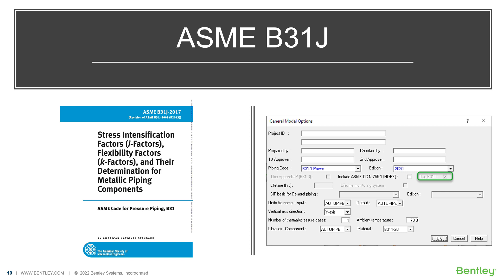B31J provides detailed calculations for flexibility factors, branch and header flexibilities, SIF values, and some commentary on experimental results as well. The incorporation of such flexibility factors aims to provide a more realistic behavior of your piping model, specifically for models with tee components.